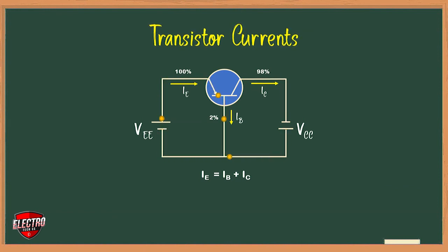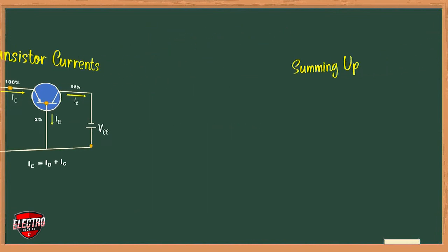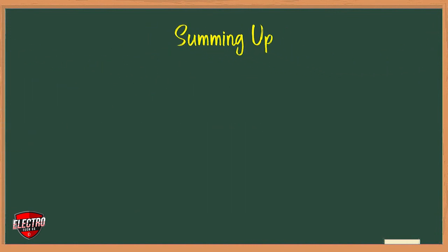Applying Kirchhoff's current law, we have IE equals IB plus IC. This statement is true regardless of transistor type or transistor configuration.